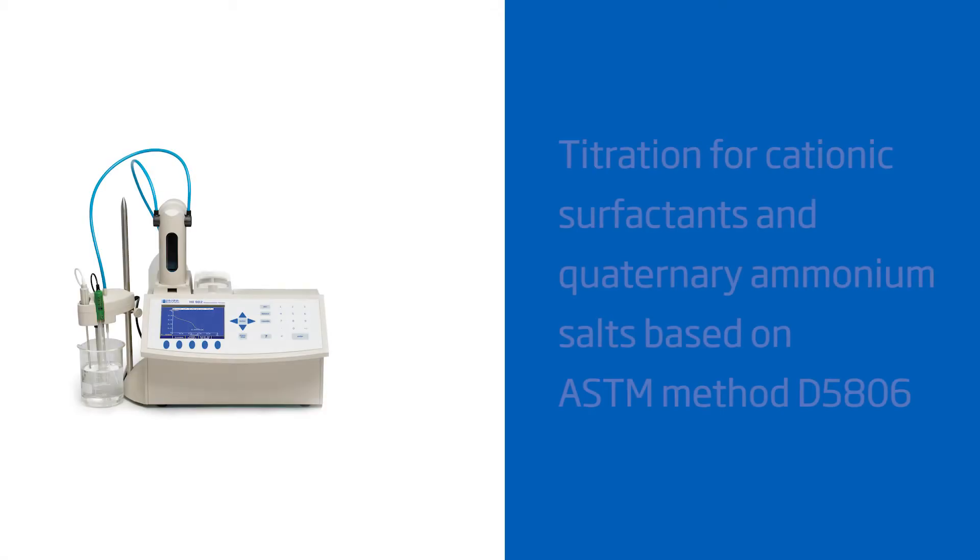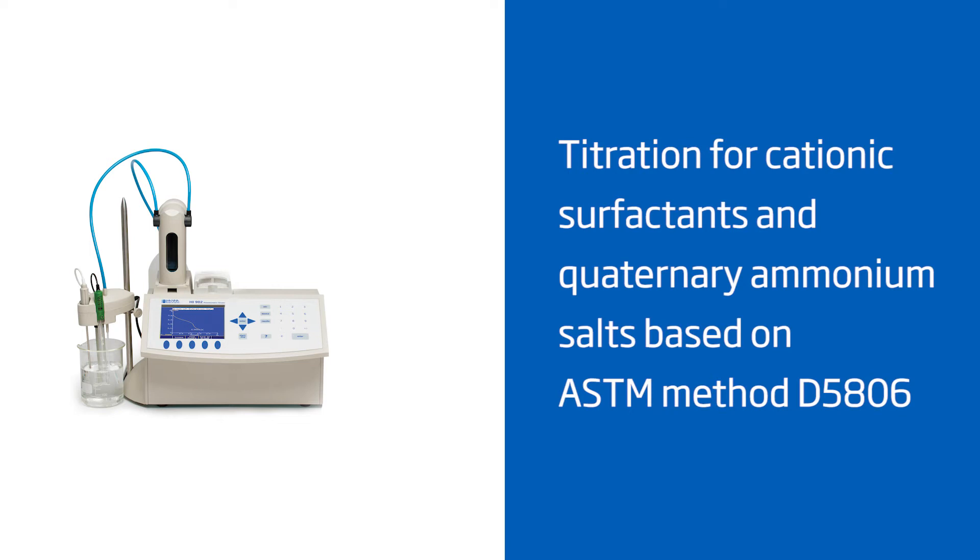Now, let's go into the lab and run some samples. First, I'll show you how to run a titration for cationic surfactants in quaternary ammonium salts based on ASTM method D5806. These surfactants are found in many commercial sanitizers, so testing is very important to ensure a consistent quality product.